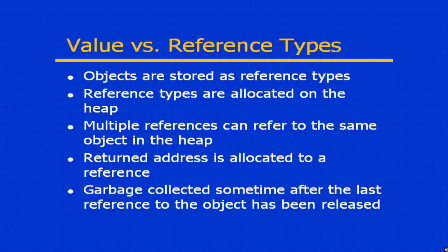With this in mind, you can have multiple references that refer to the same physical object in the heap. I could have more than one reference — a variable, if you like — that points to the same object. When you allocate an element on the heap, a return address is basically allocated to that reference. The garbage is also collected basically sometime after the last reference to the object has actually been released.